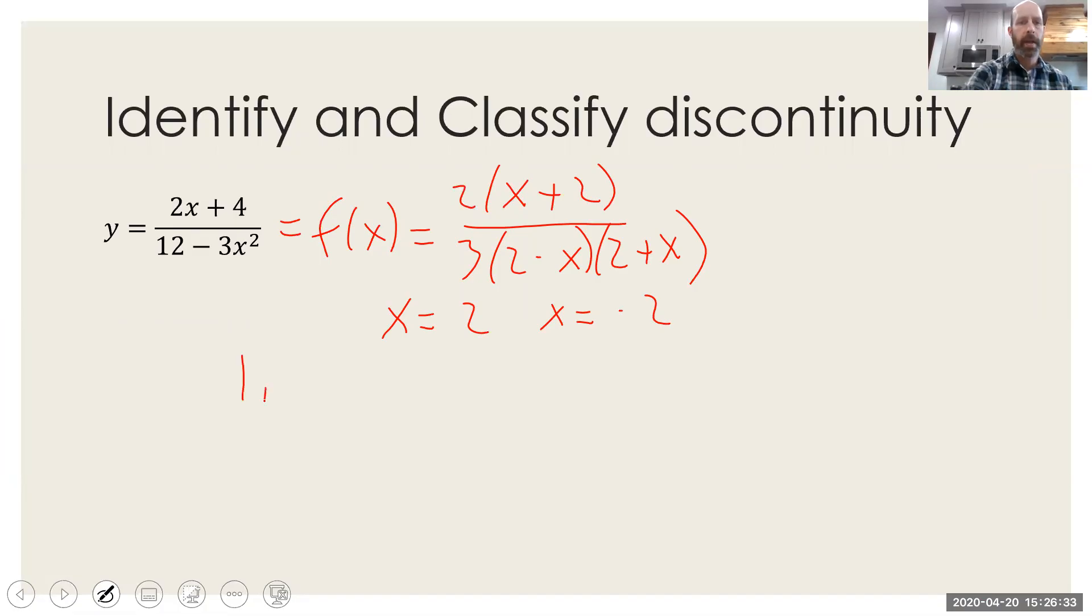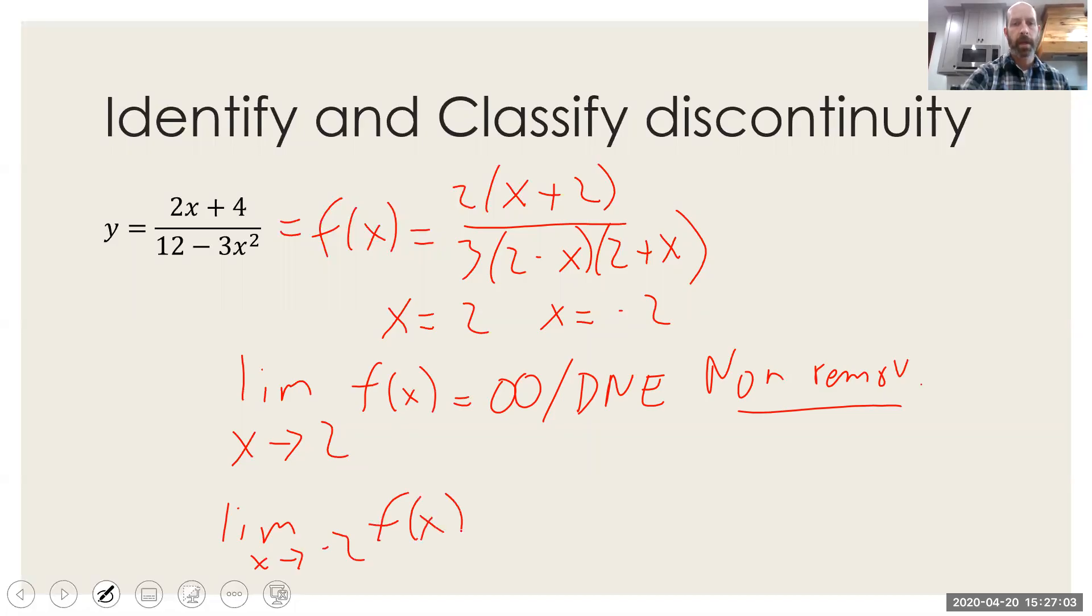Now it turns out that the limit as x goes to two of our function f of x is infinity, or you could say DNE. Therefore, this is a non-removable discontinuity. The limit as x goes to negative two of f of x, this one turns out to be one-sixth, because you would cancel these two guys, and then you would plug in your negative two. So therefore, this one is a removable discontinuity. So that's example one, using limits.